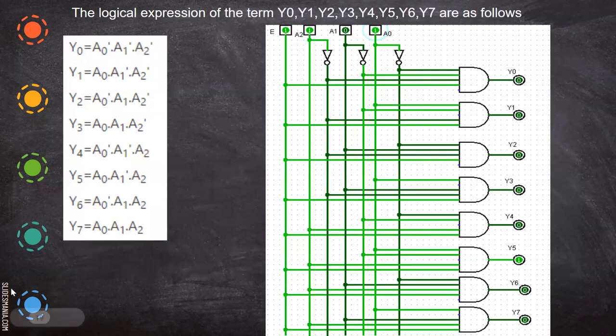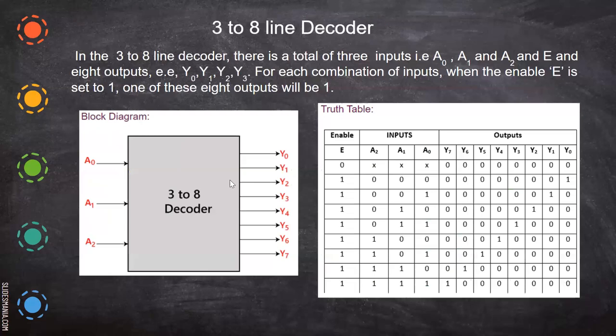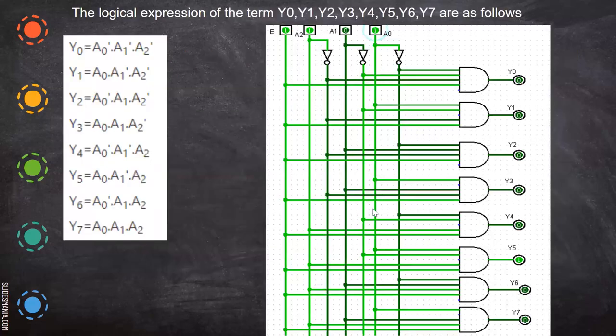Then, how it is implemented is the same way. How we have done for the two input. Here, three inputs. A naught, A1, A2 and enable. So enable goes to all the AND gate. And then here, this is complemented and based on this equation. I hope all of you know how to form this equation. So for Y naught, what is the combination of this? A0 bar, A1 bar and A2 bar. So based on this equations, we can form the, we send the respective inverse to the respective AND gate and we'll have the output.